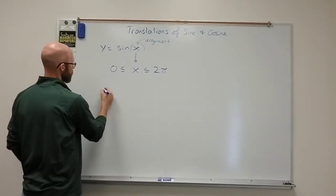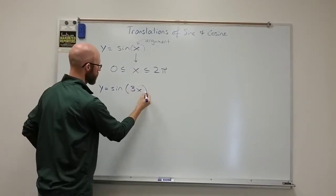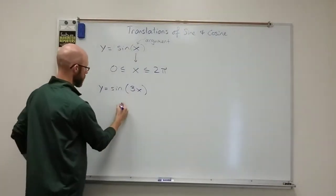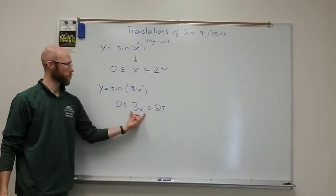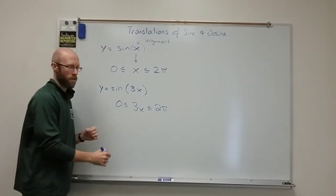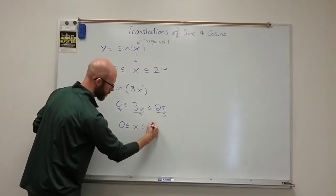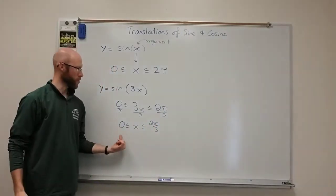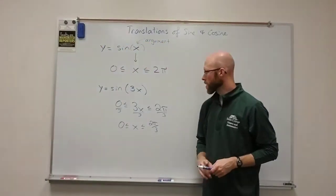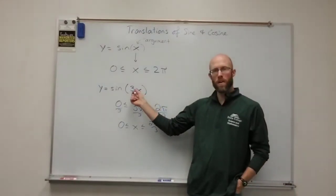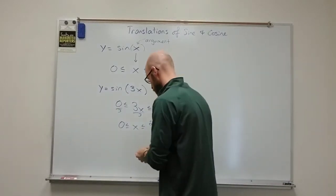For example, if you had y = sin(3x), you would take the 3x, pin it in the inequality between 0 and 2π, and then solve for x by dividing out the 3. The new period would run from 0 to 2π/3, giving a period of 2π/3. Now we're going to not just multiply or divide inside the argument — we're going to do some adding and subtracting as well.